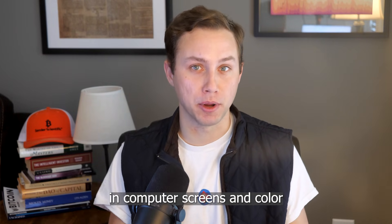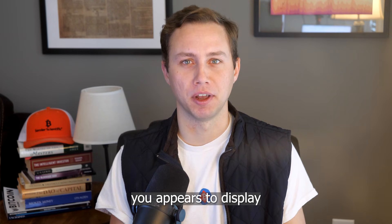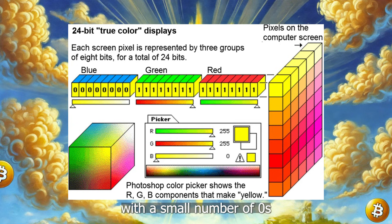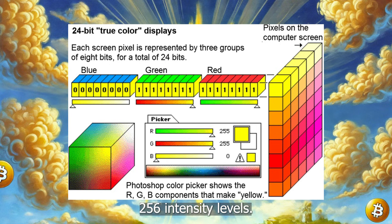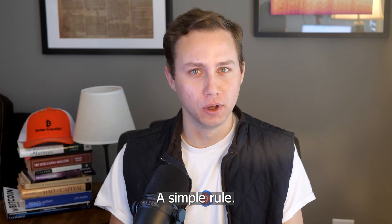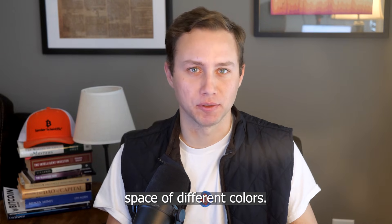The same principle appears in computer screens and the color we see. When you look at the world, it feels like there are endless colors. The screen in front of you appears to display an infinite variation, yet every pixel is built from only three primary colors — red, green, and blue. Each is represented digitally with a small number of zeros and ones. In most modern displays, each color channel uses eight bits, meaning each channel can express 256 intensity levels. When you combine those three channels, you get 2 to the 24th power possible combinations — that equals 16,777,216 distinct colors. Three basic color inputs, a simple rule, over 16 million possible outcomes.